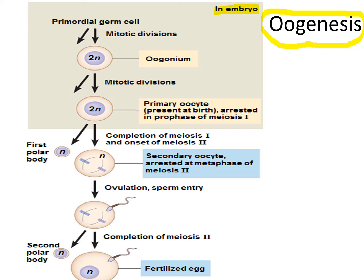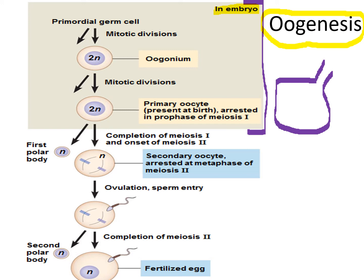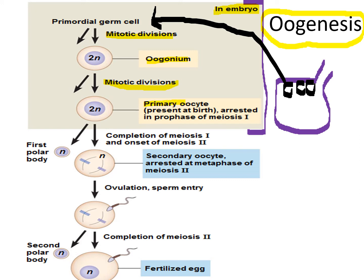Let's focus on oogenesis during the embryonic stage. In the ovary, cells lining it are called primordial germ cells. These primordial germ cells undergo mitosis to form an oogonium, which undergoes mitosis again to form a primary oocyte. At this stage we are diploid. Meiosis I then starts to take place, but it stops at prophase I — and this is when the female is born. That is why we say a female is born with all the eggs she will have in her lifetime.